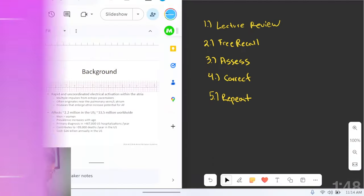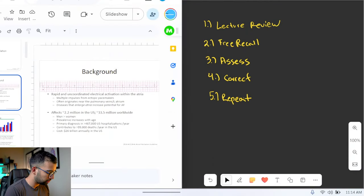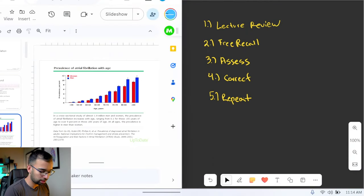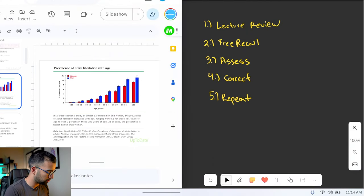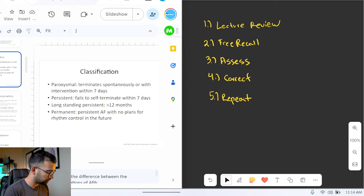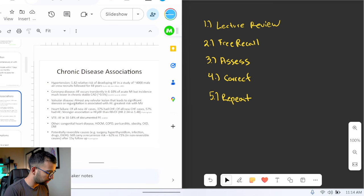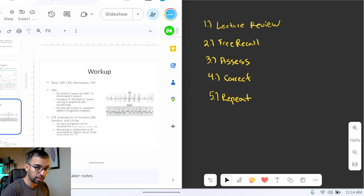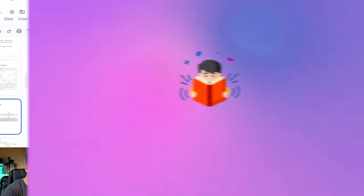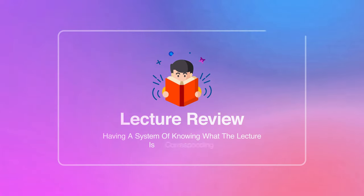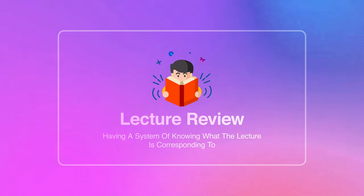Here I have an example lecture on AFib. As you can see, this is your typical lecture where some of the content is wordy and some is graph-based. At this point, ideally you have done some review of the lecture itself — maybe you've gone through it, made an outline, wrote some questions down. The first step is lecture review, which essentially means having a system of knowing what the lecture and the slides correspond to.